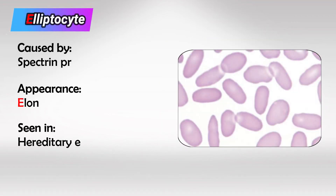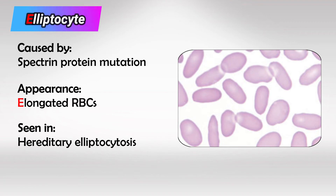Next we have elliptocytes, and these are highly specific because there is only one condition that can cause them — hereditary elliptocytosis, which is the result of a genetic mutation in the protein spectrin.